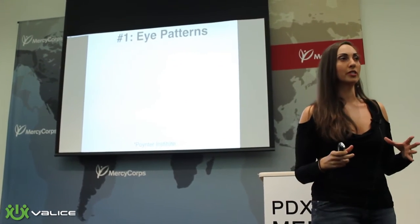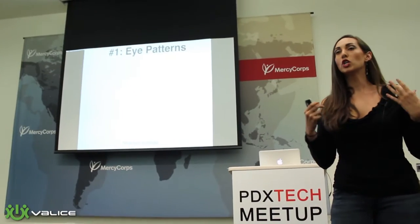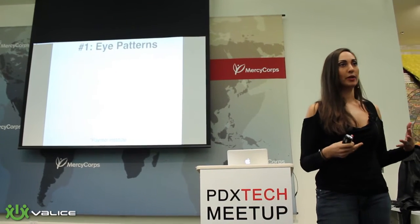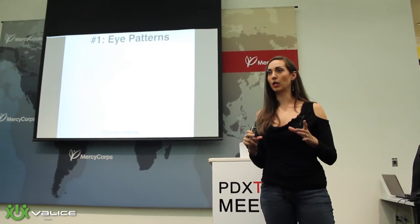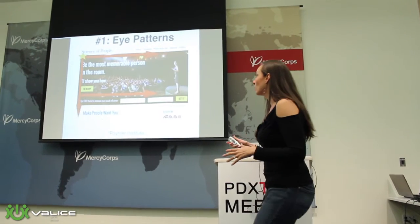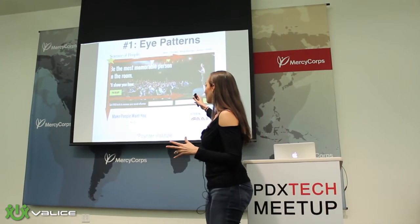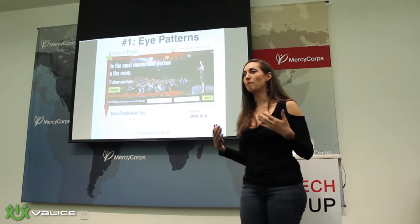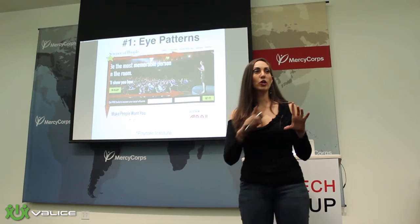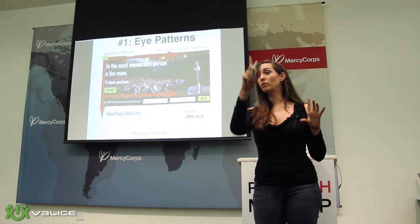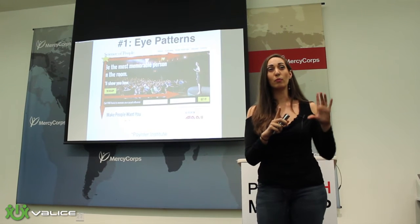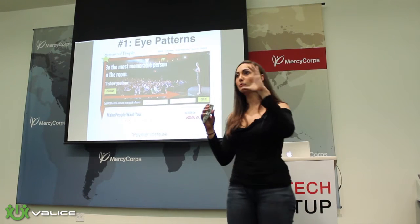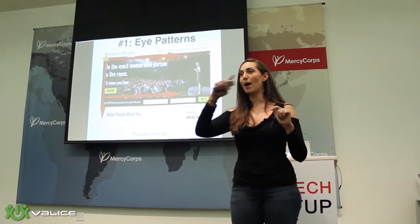The first thing is a study done by the Poynter Institute. They tracked people's eye behaviors and patterns as they observed technology. I'm going to focus on what they did on webpages, because mobile apps are a little bit different. What they found was that people's eyes, when they land on a webpage, move in an F pattern.